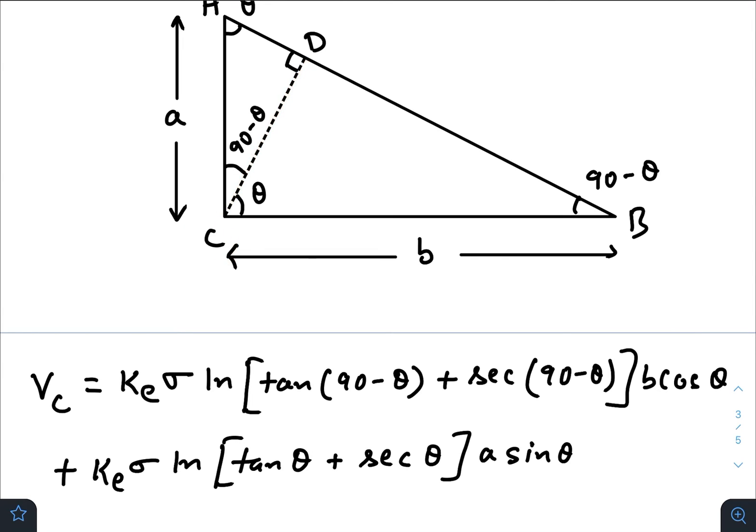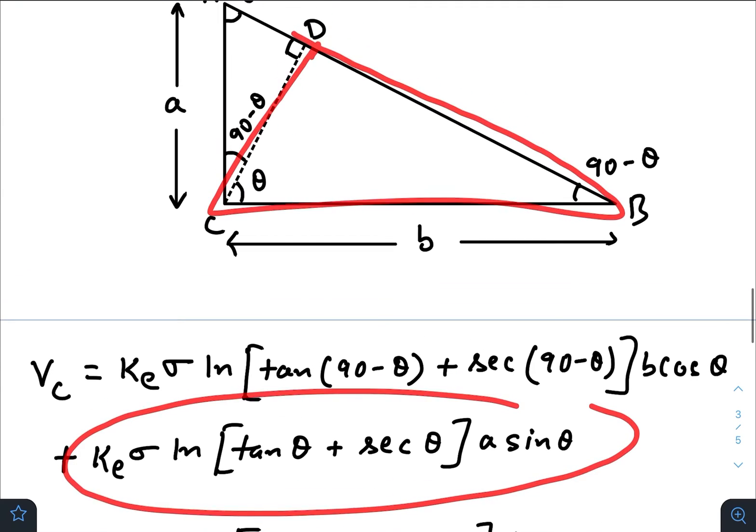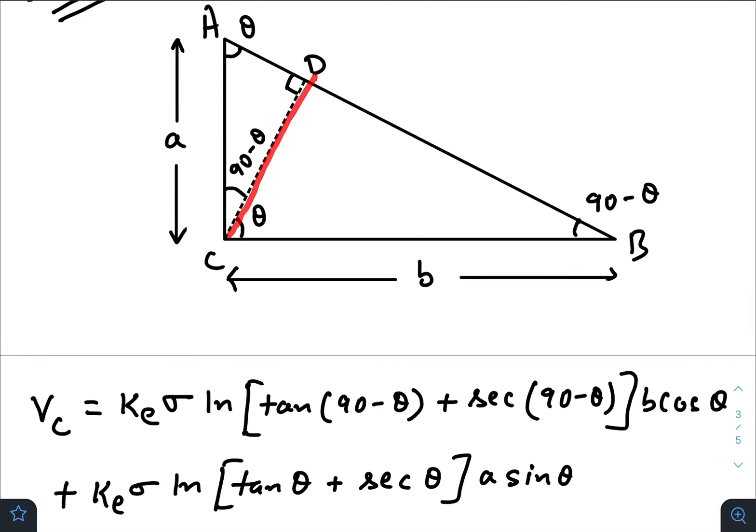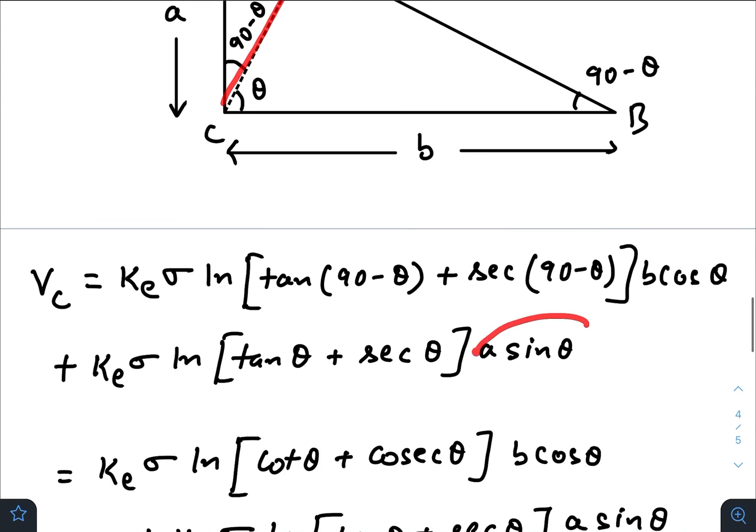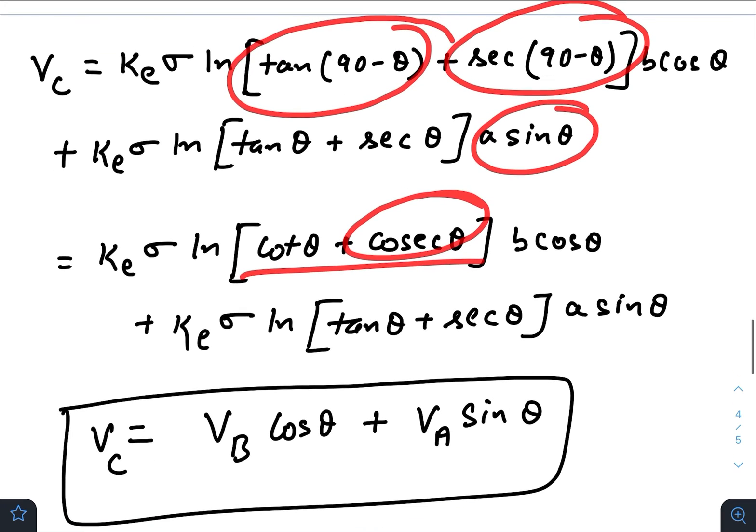And now the second term: potential at C will be the sum due to this triangle and this larger triangle. So for this larger triangle, the potential would be k_e sigma ln of tan theta plus sec theta times length of the base again. But now I will write the length of the base in the form of a—that would be a sin theta. Now just again, tan 90 minus theta means cot theta, sec 90 minus theta means cosec theta. So this is the expression.